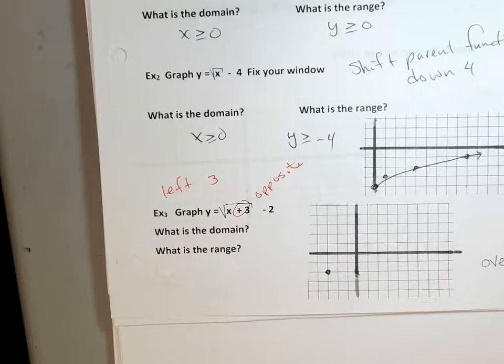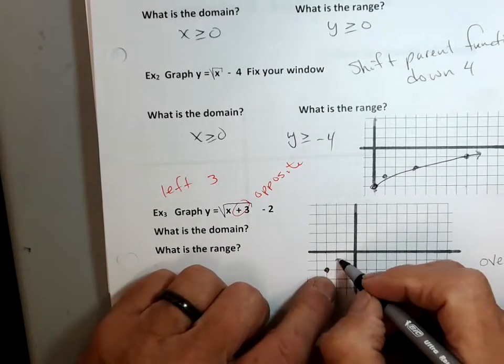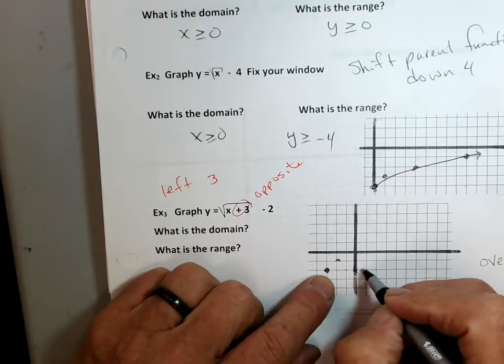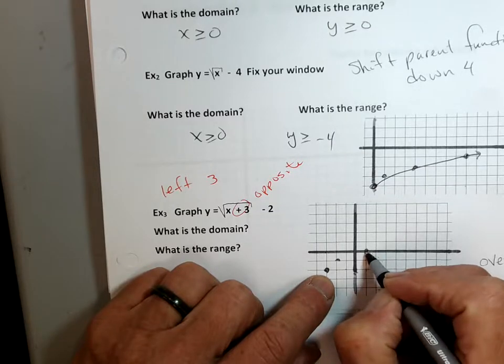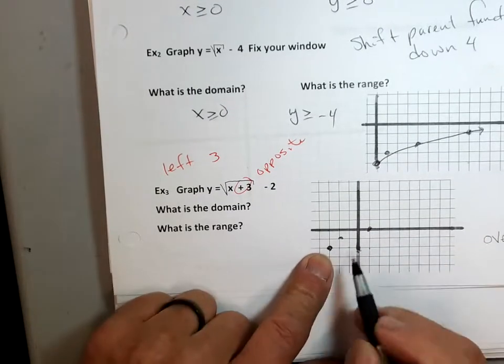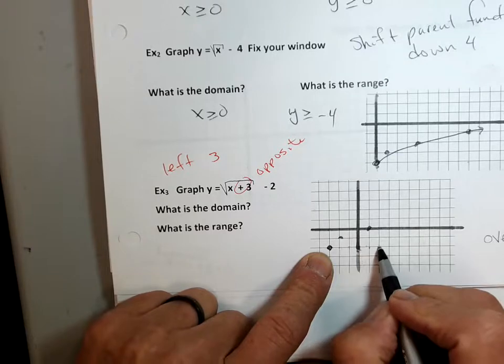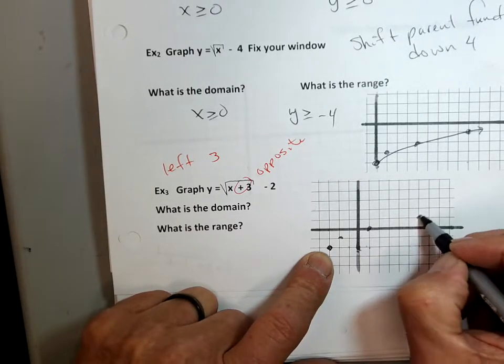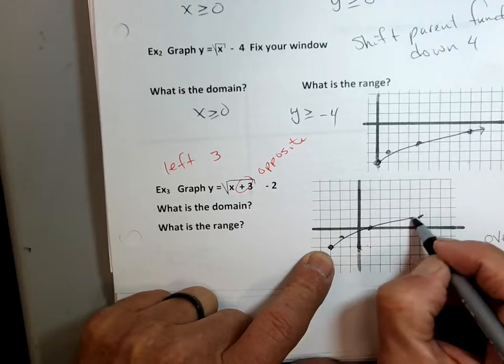What x value would make it 0 out? Negative 3. Do you get that? That's why it's the opposite because it gets us to its lowest y value. And then from here, we'll do the same thing. We'll do our 1, 1, our 2, 1, 2, 3, 4, square root of 4 is 2. Go back to our endpoint. We'll go 1, 2, 3, 4, 5, 6, 7, 8, 9. Square root of 9 is 3, and there it is.